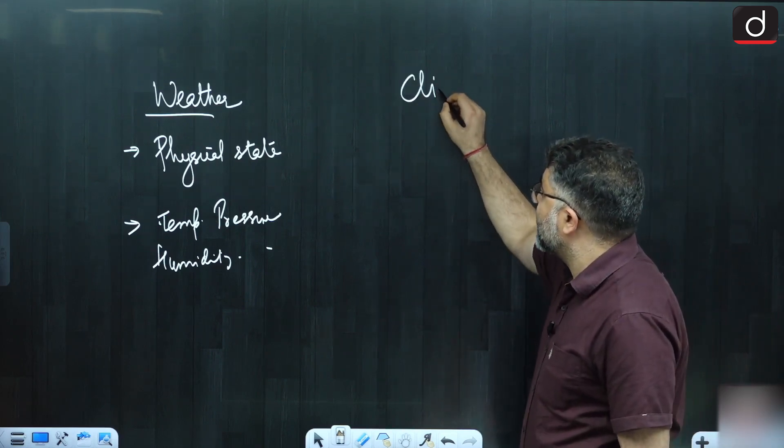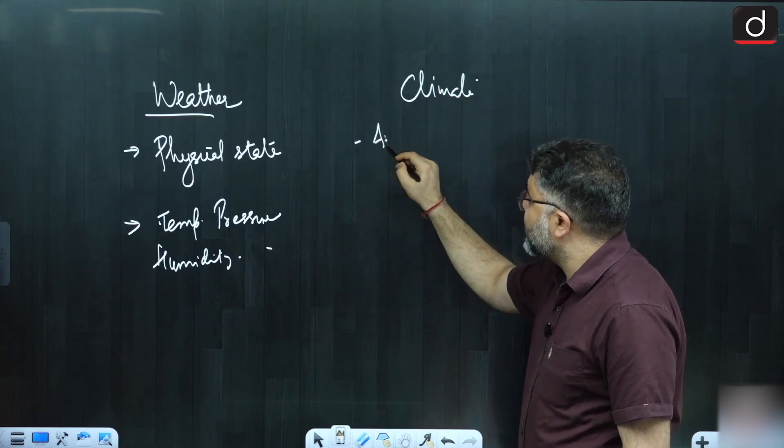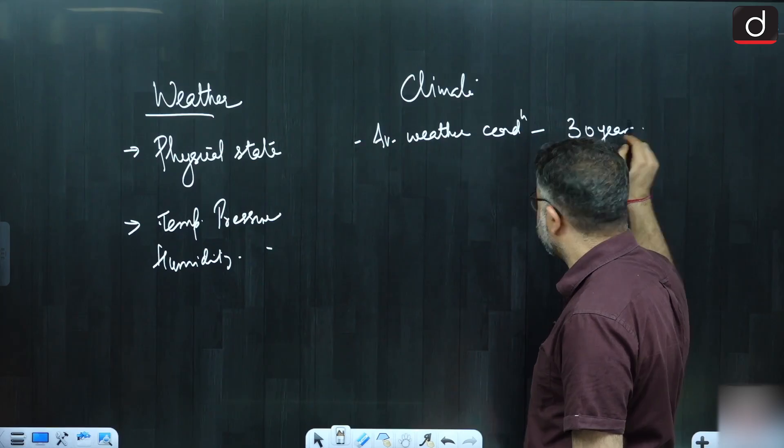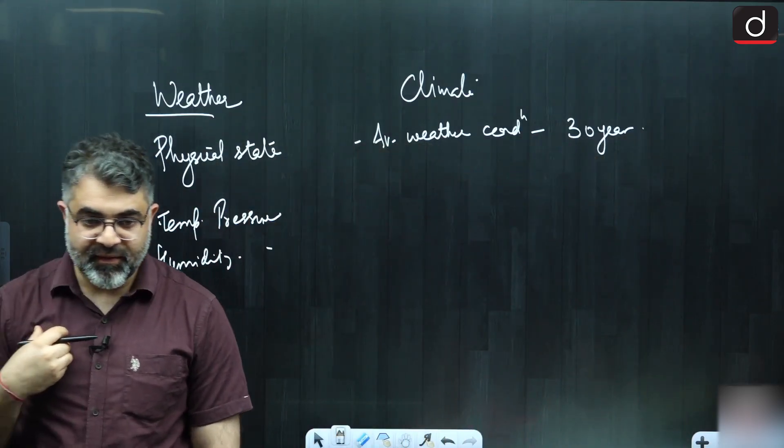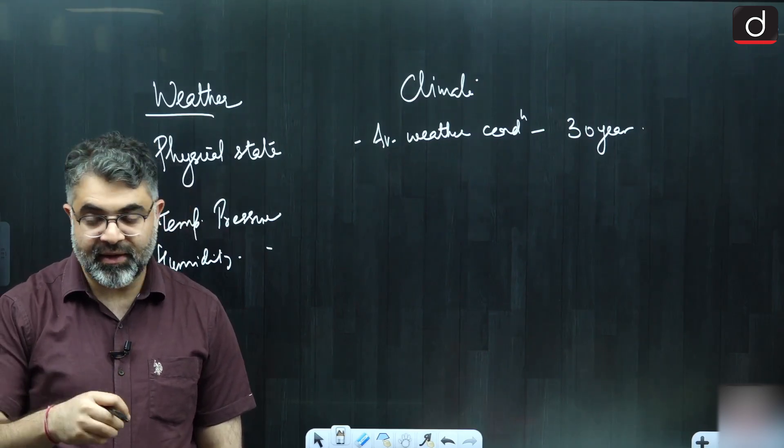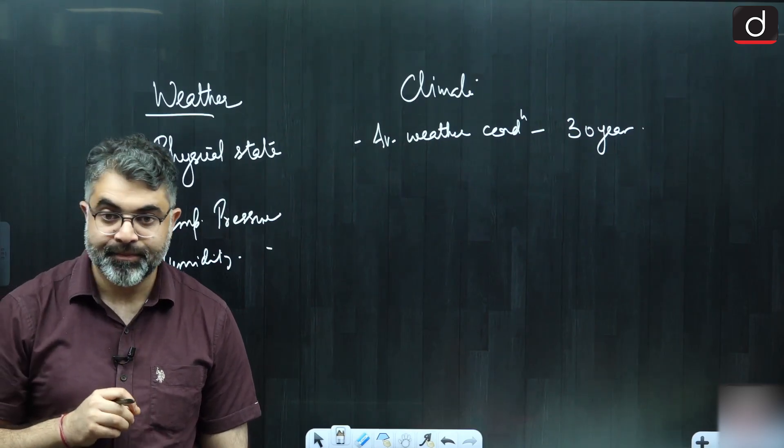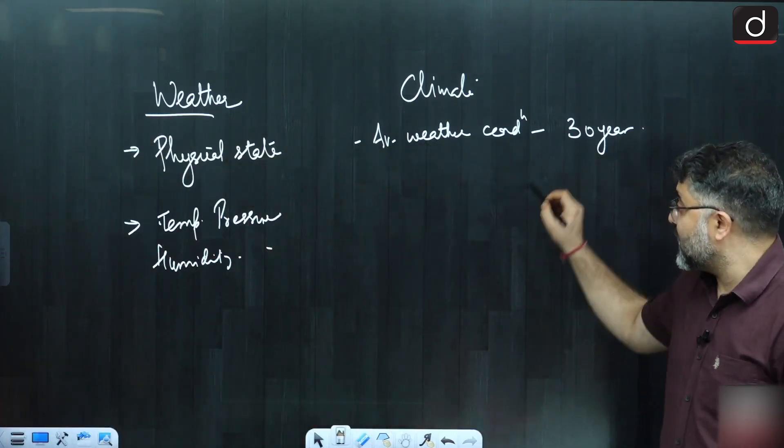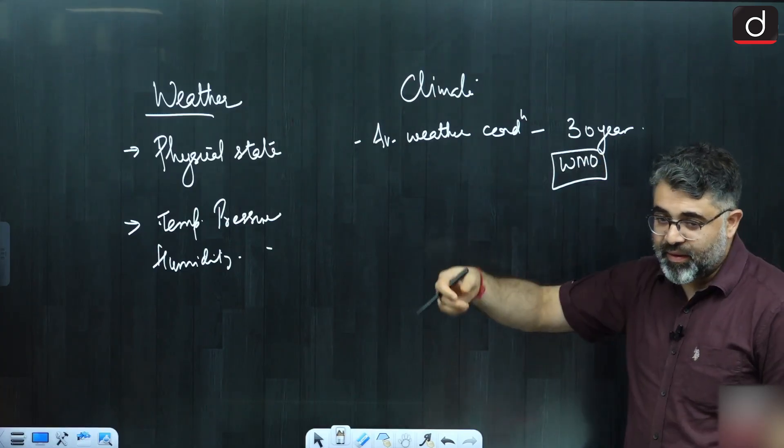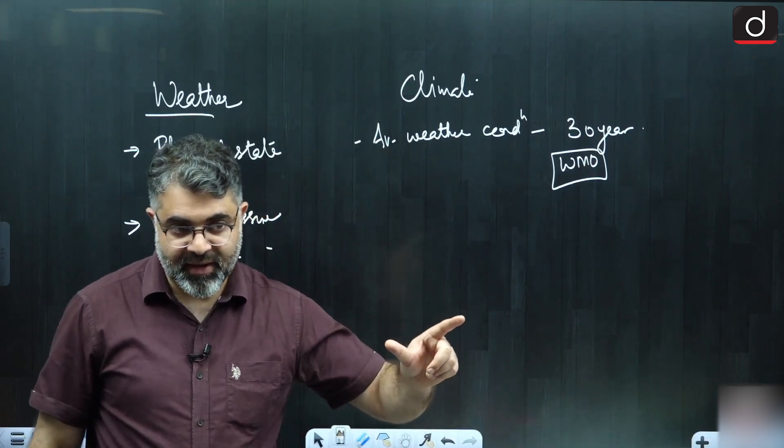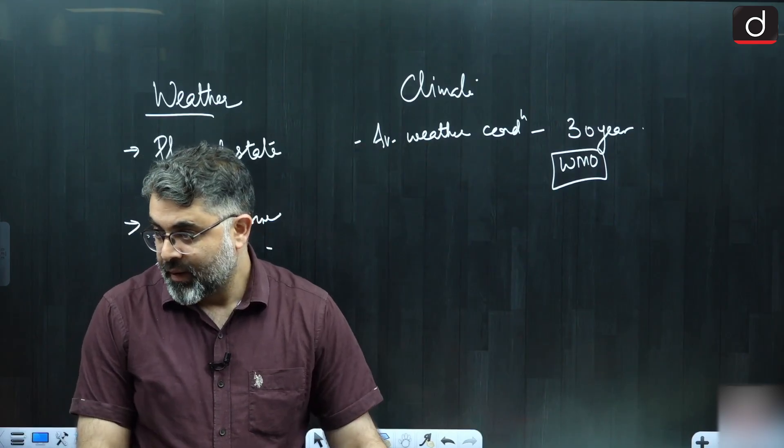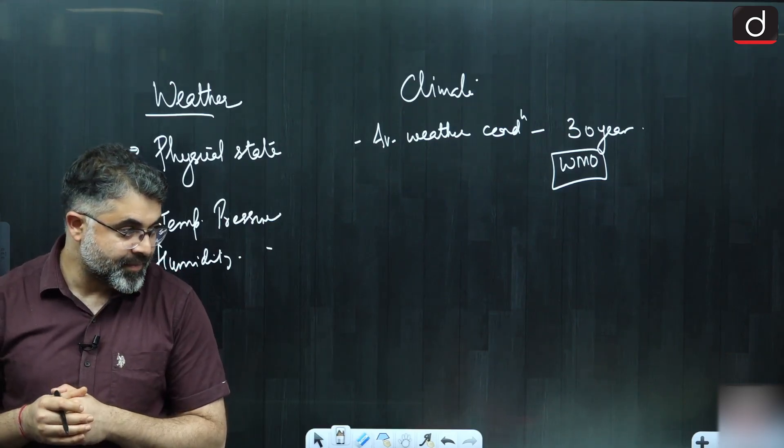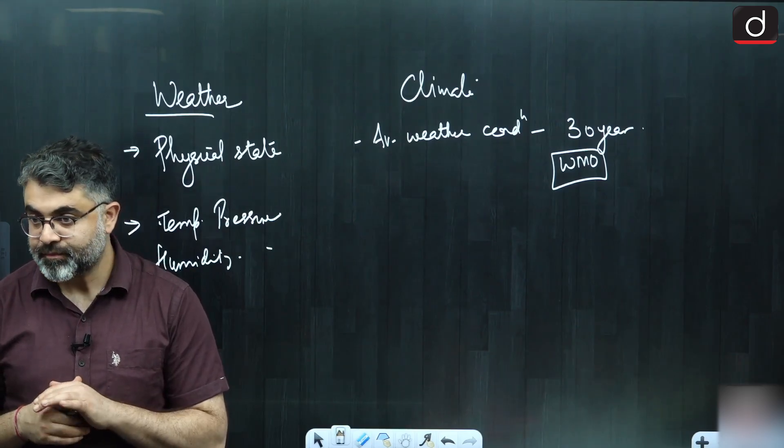When we are defining climate, it's the average weather condition for a period of about 30 years at least. If I have to say climate of Delhi is subtropical, I am also implicitly considering weather conditions for last 30 years. According to World Meteorological Organization (WMO), the time that we take to define a climate condition is for at least 30 years. Average temperature of 30 years, average humidity of 30 years, average whatever conditions of 30 years is considered to be climate.